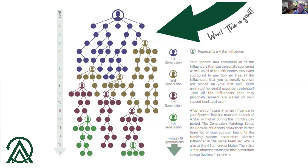You have the potential because I've never seen a company put a generation match that's this deep. When you really understand this, you'll see that there truly is no limit on the income you can build, because there's no limit on the number of people you can refer or that they refer. Even though the three-by structure is limited to 88,000 people, there's no limit on the amount of people you can match.